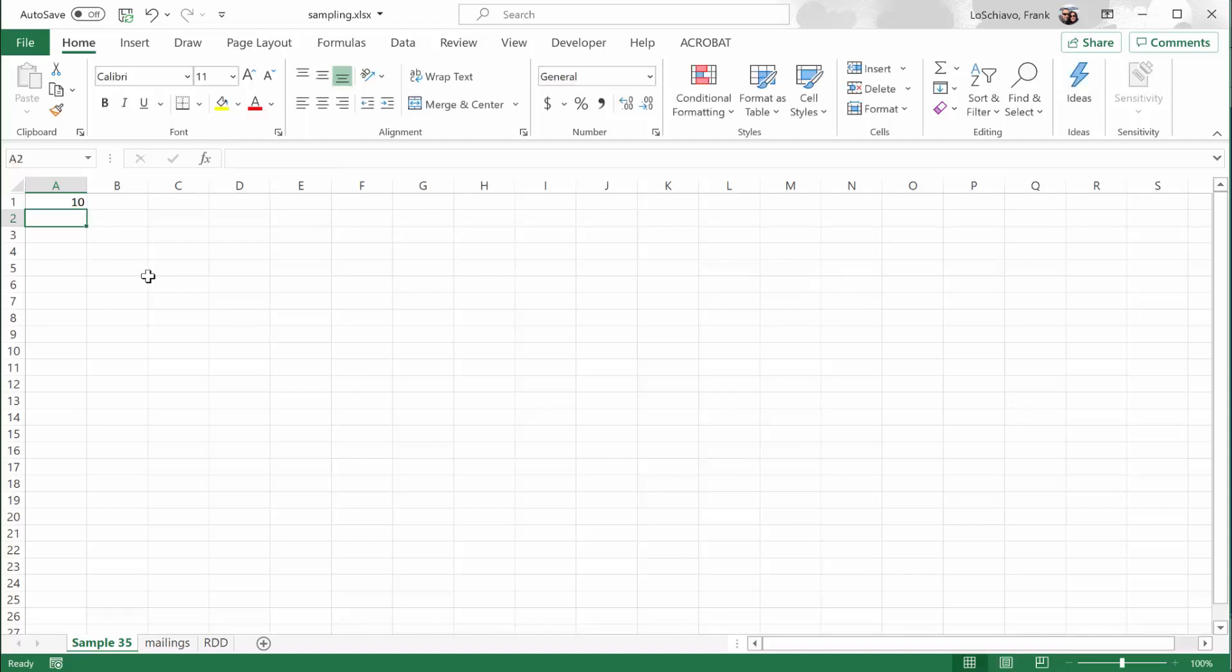I want that exact same function used five times over so that we can select five people. So I'm simply going to select that cell and copy it down five times.